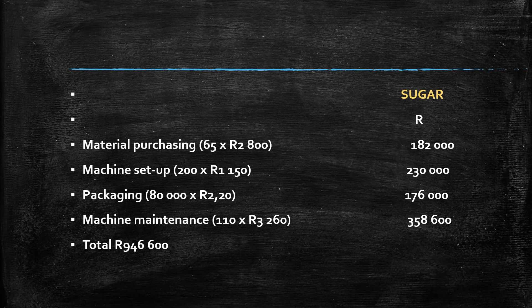We do the same for Sugar Jeans. The same costs are being allocated, but they will vary based on what was required for Sugar Jeans. Note that we use 90,000 packaged units for Sugar, not just 65,000 sold, because 65,000 was only what was sold — we must add the 25,000 closing inventory units as well, just as we did when calculating the cost driver rate.